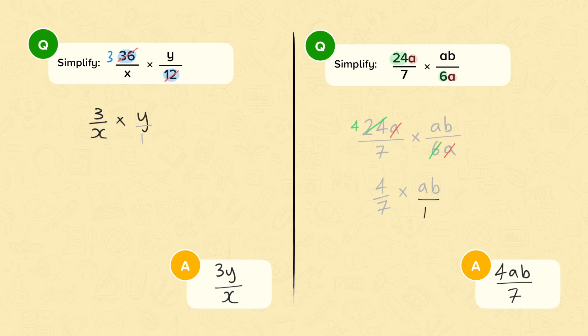Well, firstly, I cancelled common factors in 24 and 6. Divide by 6. Well, 24 divided by 6 is 4. And that 6 cancels out. Now, I looked at the a's. I cancelled an a here and here, as it's a common factor. You could have, of course, cancelled the a here and here. It really is up to you.